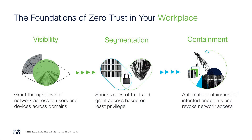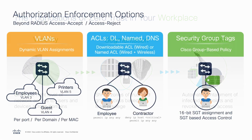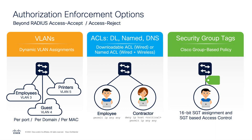ISE is critical for a zero-trust deployment, enabling the ability to define the right level of access for devices and users in the environment, the ability to segment or reduce the communications occurring between them, as well as the ability to contain devices should an event occur. Cisco's Identity Services Engine provides various mechanisms for applying security policies in the environment.